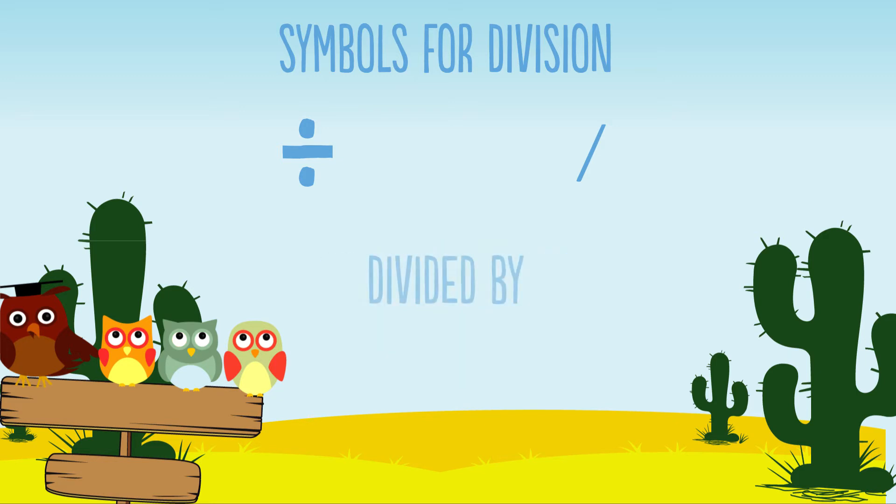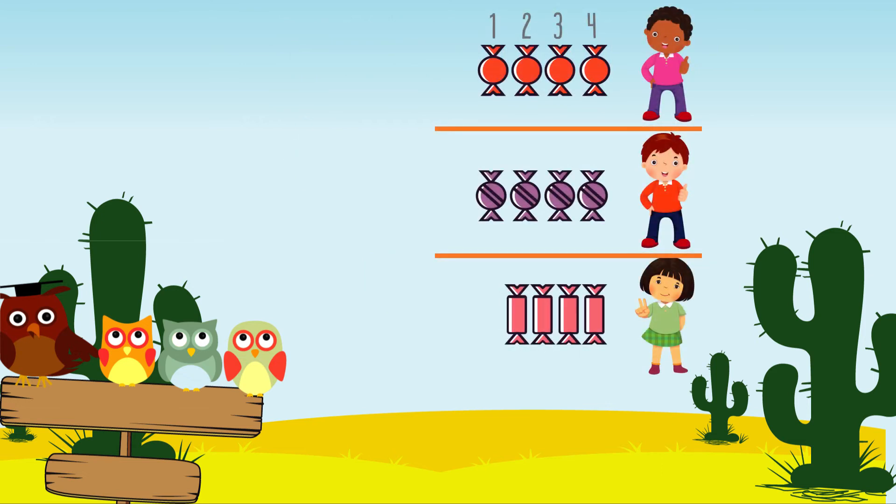Our solved example can be written as 12 divided by 3 equals 4.